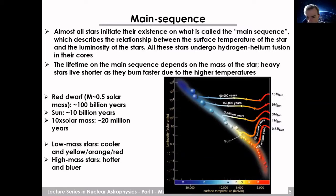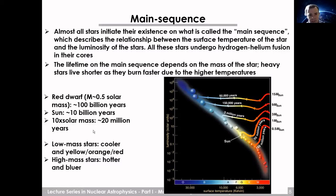This plot shows luminosity on the y-axis versus the surface temperature of stars. There is a band called the main sequence, and almost all stars begin their existence on it — showing a strong correlation between luminosity and surface temperature. All these stars undergo hydrogen and helium fusion in their cores. The lifetime a star remains on the main sequence depends on how heavy it is; heavier stars live shorter because they burn faster at higher temperatures. For example, a star 10 times the mass of the Sun lives only about 20 million years.